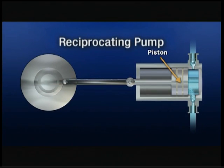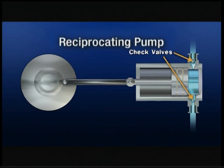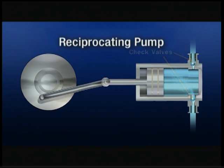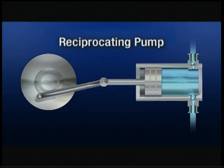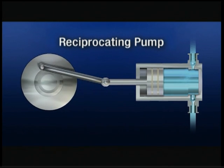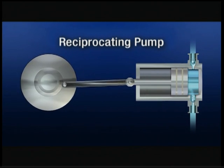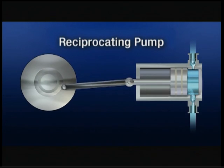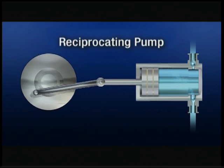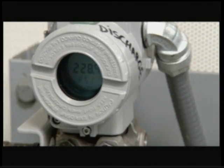Reciprocating pumps have a piston that moves back and forth in the cylinder. Liquid is admitted and discharged through a check valve. These pumps are used with very high pressure applications and where abrasive or potentially hazardous liquids must be pumped. Pumps that feed chemicals for water treatment are a prime example.